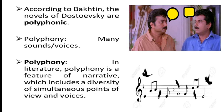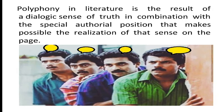Bakhtin borrowed the term polyphony from music. The best example for polyphony is the sound of birds singing simultaneously in the morning — there are several sounds but there is harmony. In literature, polyphony is a feature of narrative which includes a diversity of simultaneous points of view and voices. Polyphony is the collective quality of an individual utterance; it is the capacity of an utterance to embody someone else's utterance.